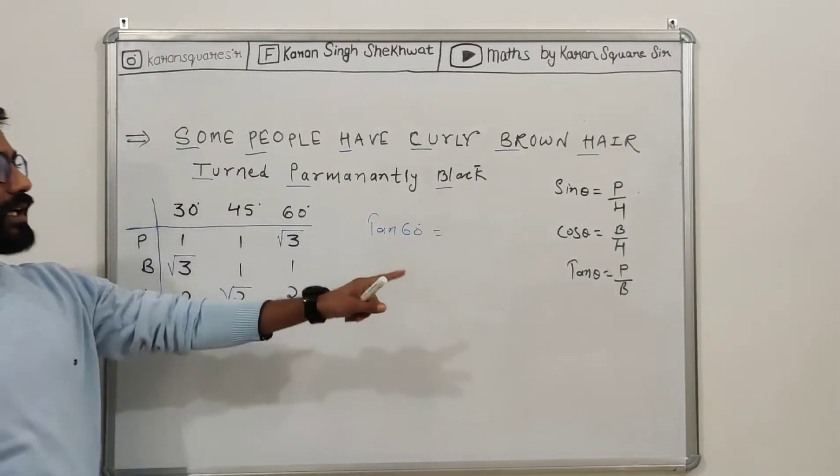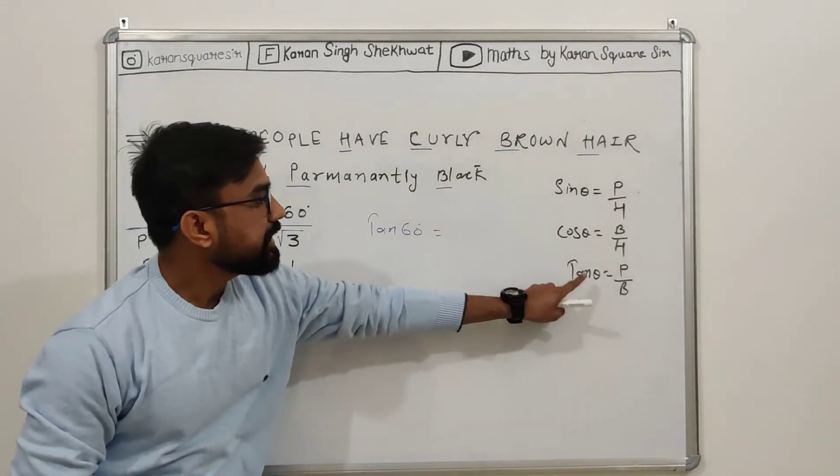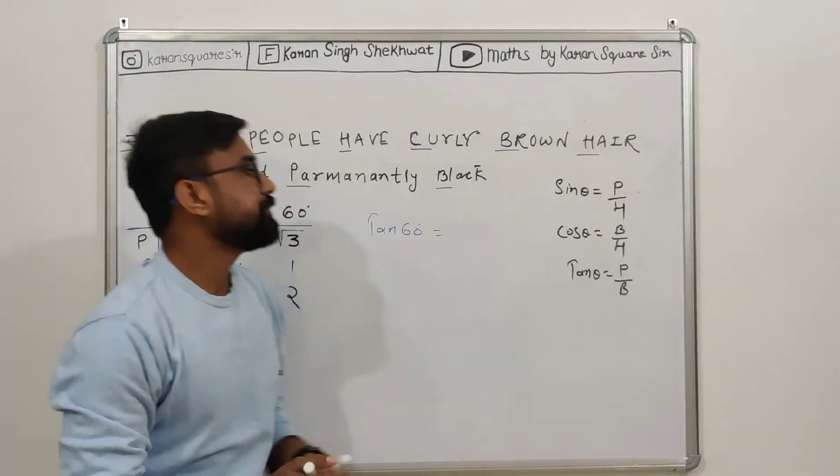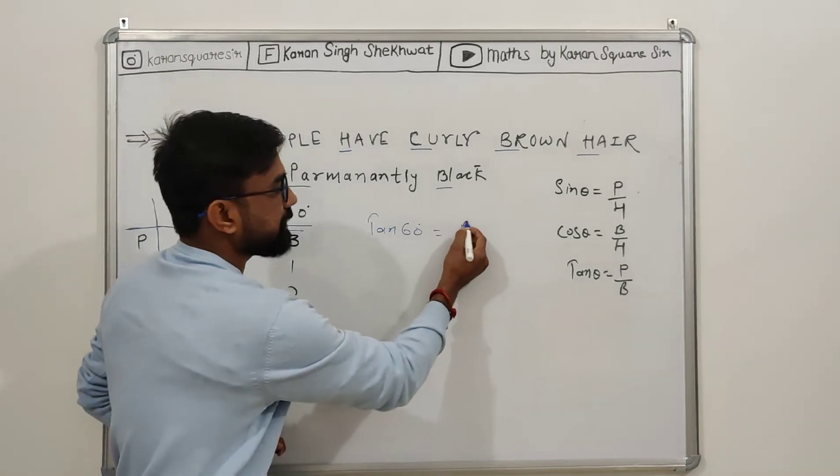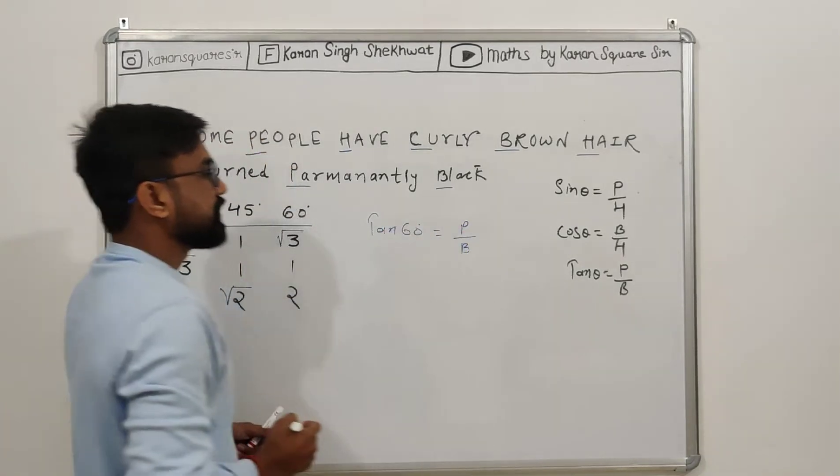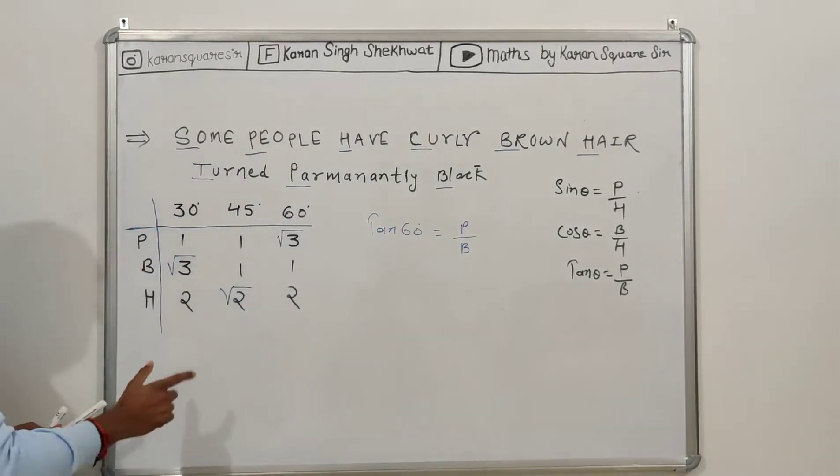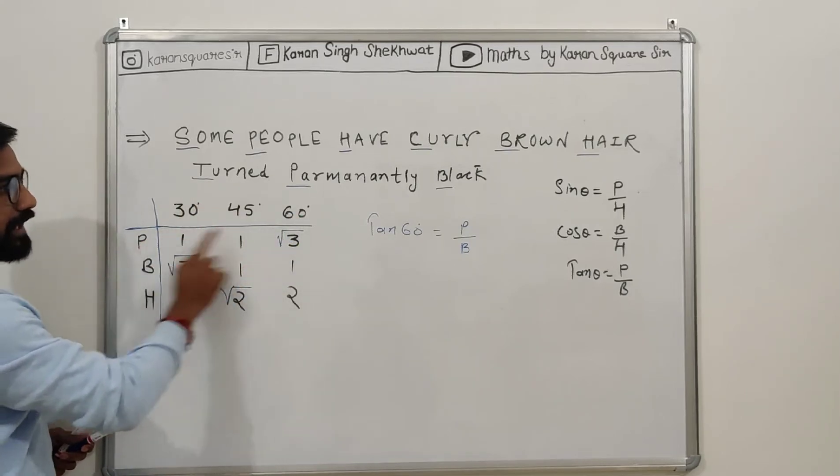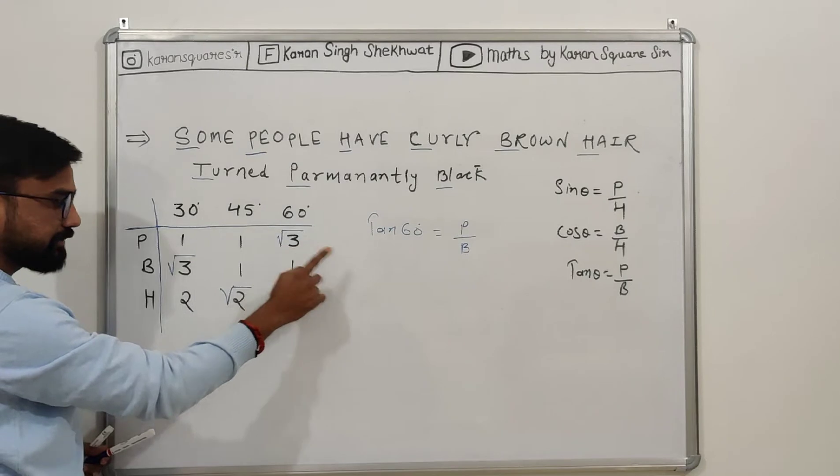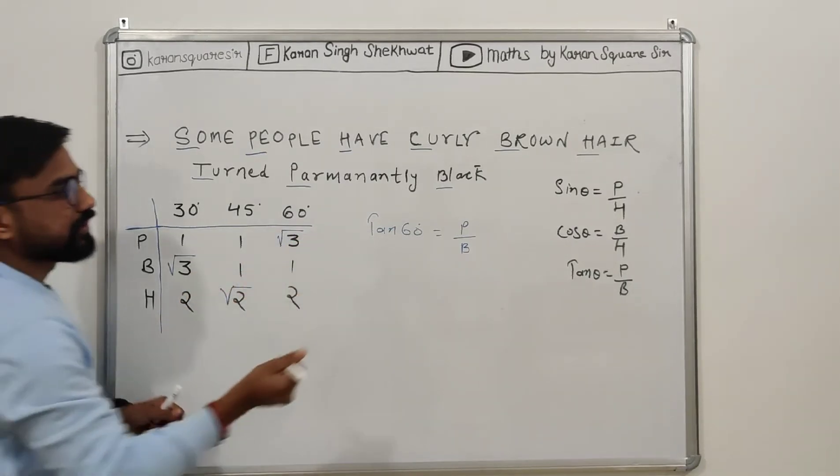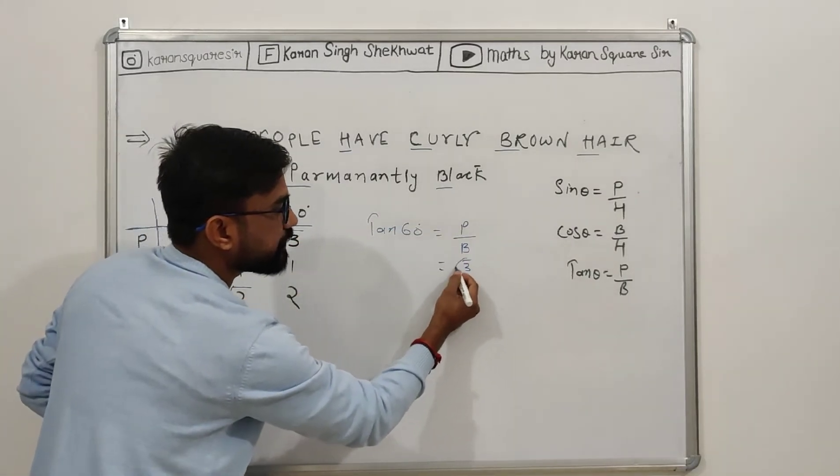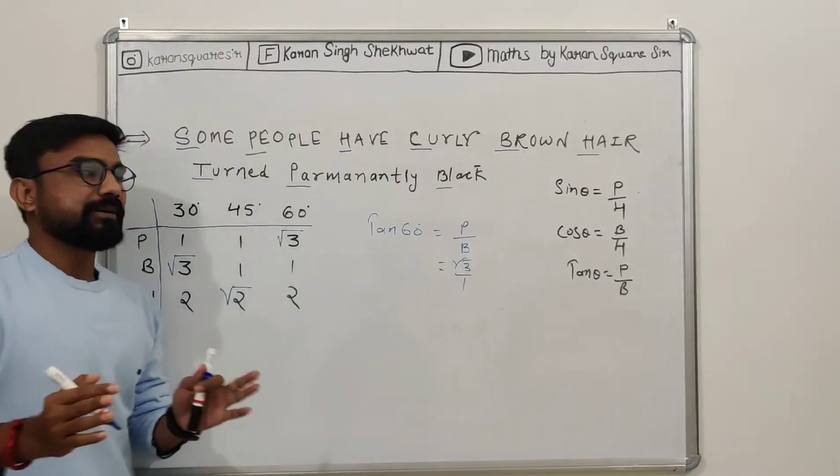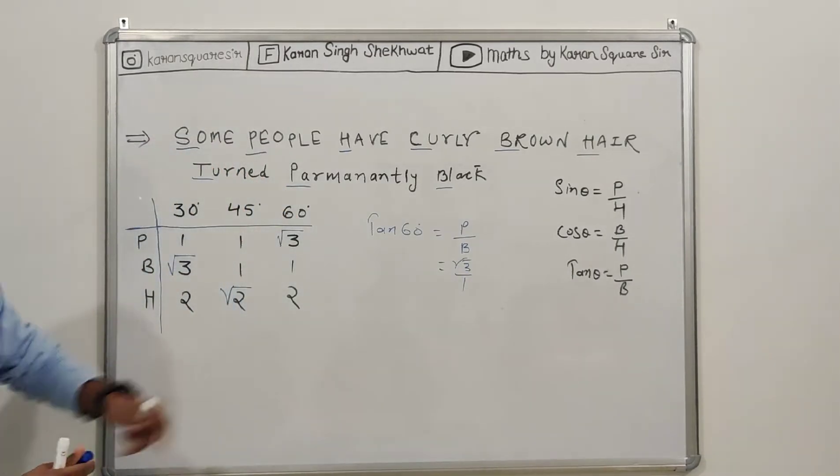So p upon b. Now the table: here in the column, tan 60. Perpendicular means root 3 and base means 1, so root 3 upon 1. So I have written here in the table, root 3 upon 1. Next, I will repeat this: tan 60.